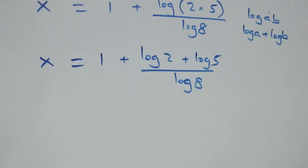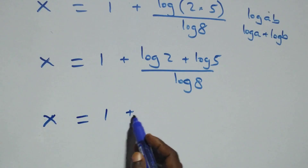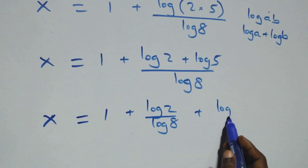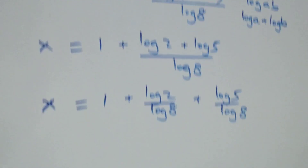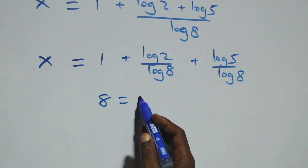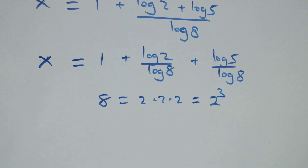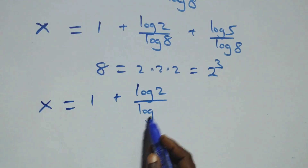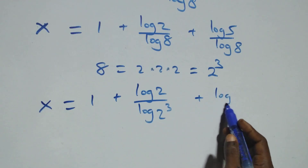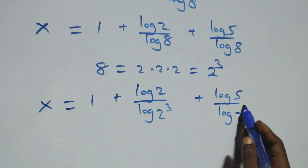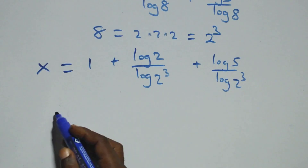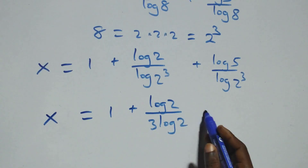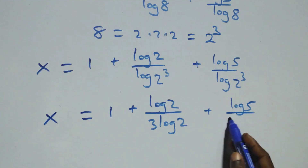We separate into two fractions: x equals 1 plus log 2 over log 8 plus log 5 over log 8. Since 8 equals 2 times 2 times 2, which is 2 raised to power 3, we write x equals 1 plus log 2 over log(2³) plus log 5 over log(2³). Applying the power rule, 3 comes out: x equals 1 plus log 2 over (3 log 2) plus log 5 over (3 log 2).